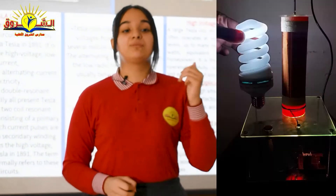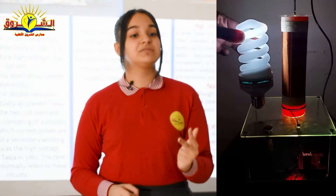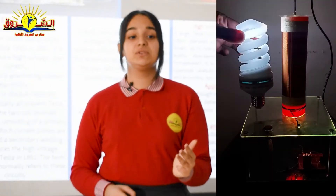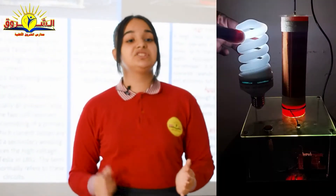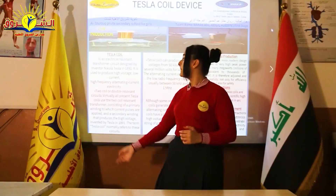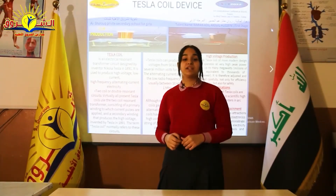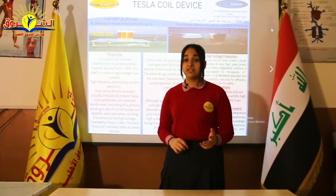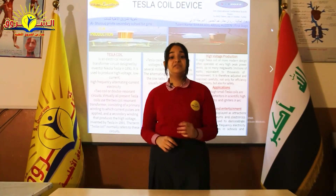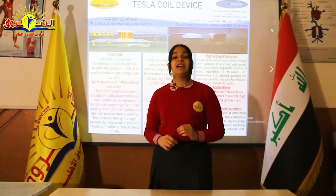The device consists of a primary coil, secondary coil, electrical resistance, power source, a switch, a plastic tube, and a transistor. The Tesla coil is an electrical resonant transformer circuit designed by inventor Nikola Tesla in 1891.